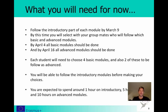By April 4 all basic modules should be done, and by April 16 all advanced modules should be finished. As a student you will need to choose four basic modules, and out of these four you will need to choose two to follow at the advanced level. You will be able to follow the introductory modules first so you get an idea of what each module is about. To make it clear: you are expected to spend around one hour for the introductory module per topic, five hours on the basic modules, and ten hours on the advanced modules — so for modules you follow at the advanced level, you will be spending around 16 hours in total.